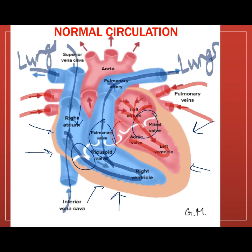Contraction of the left ventricle pushes blood through the aortic semilunar valve, through the aorta, the aortic arch, down to the thoracic aorta, abdominal aorta, and the rest of the body for perfusion.